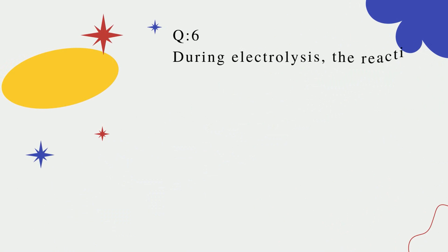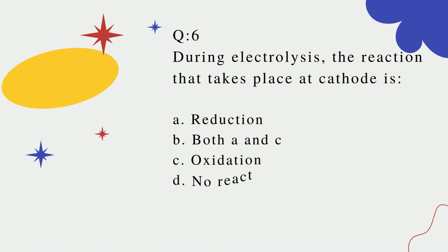Question number six: During electrolysis, the reaction that takes place at cathode is? A. Reduction? B. Both A and C? C. Oxidation? D. No reaction occurs? Correct option is B.